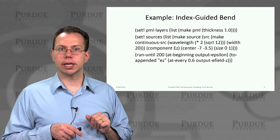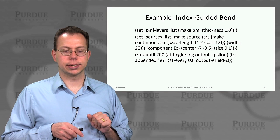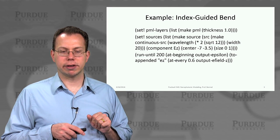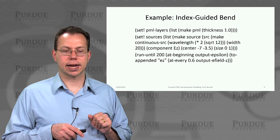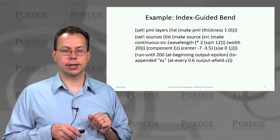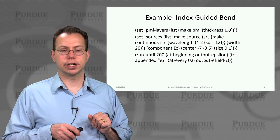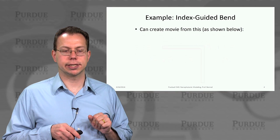We set the PML layers just like we did before. The source is slightly modified just in terms of the exact wavelength that we're looking at. And then the run function is almost the same as the previous example.